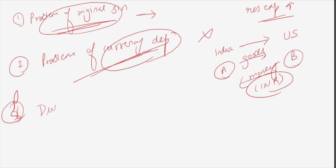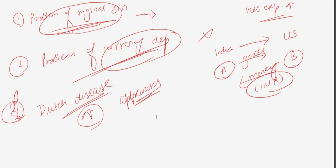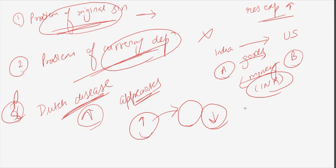The third problem is Dutch disease. When we depend too much on resource exports, it can lead to Dutch disease, whereby the rest of the economy becomes uncompetitive as the currency appreciates. When one sector performs well, the resulting currency appreciation is harmful to other sectors. For example, exports of IT services may cause Dutch disease by making the manufacturing sector uncompetitive — the currency appreciates, driving down exports in other sectors.